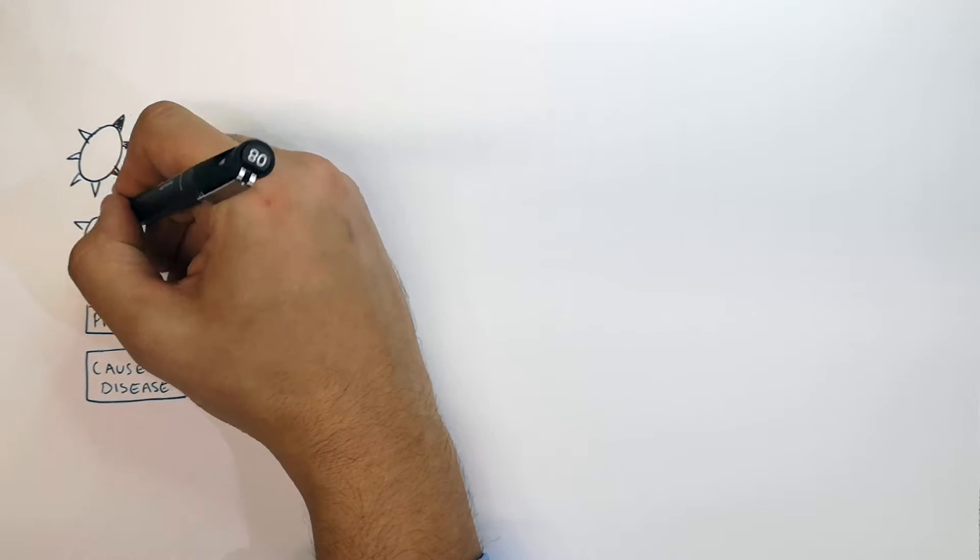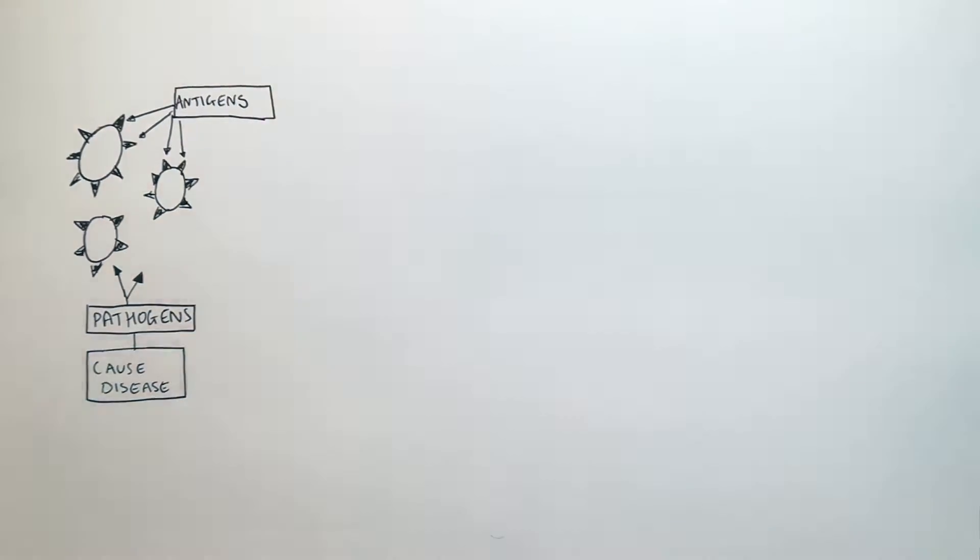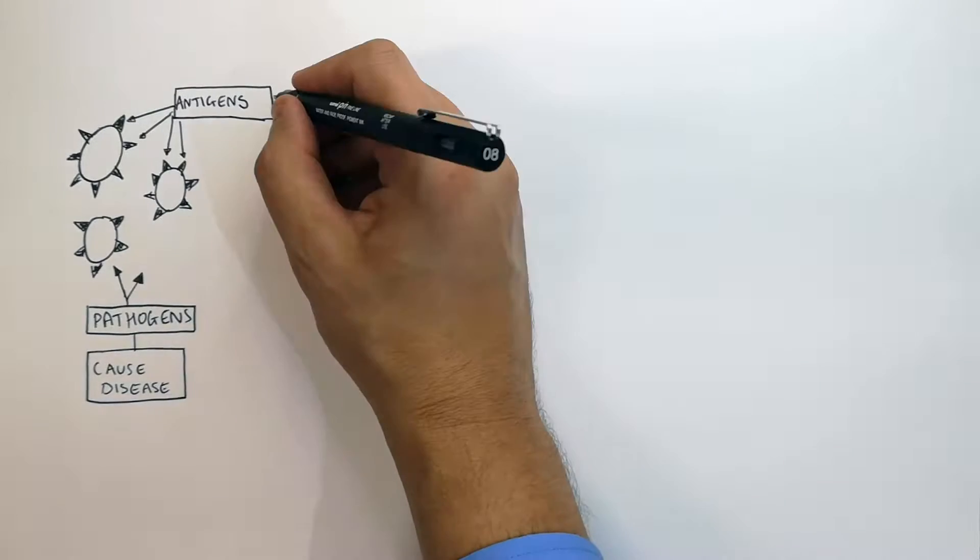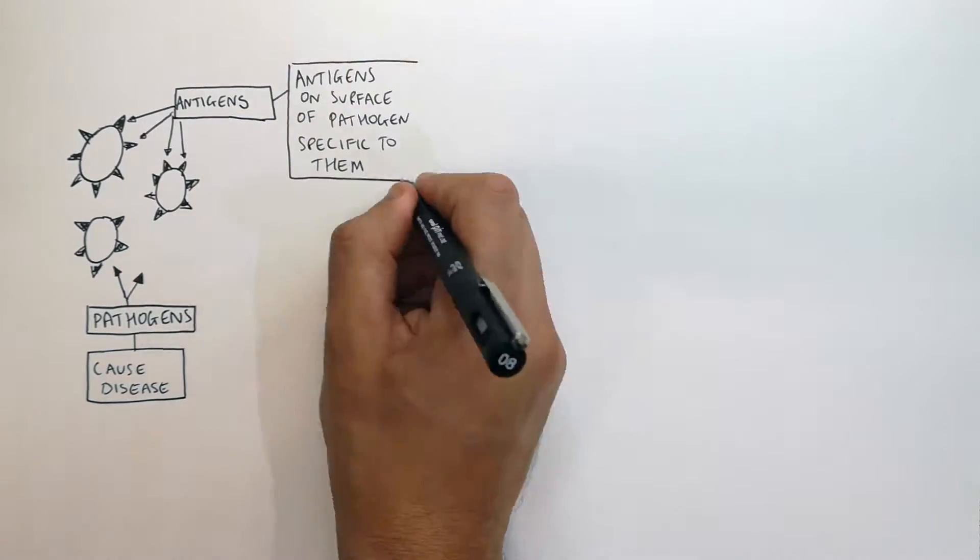All pathogens have antigens on their surface. Key word here is antigens. Antigens are molecules on the surface of a pathogen. So antigens on the surface of a pathogen are specific to that pathogen.